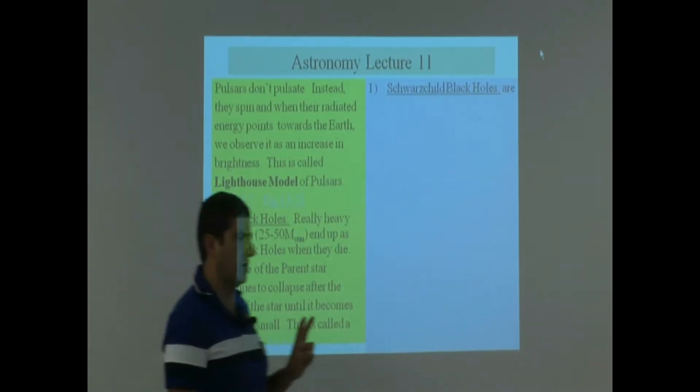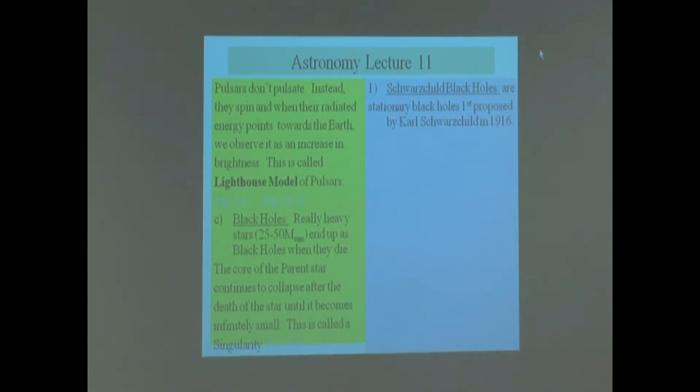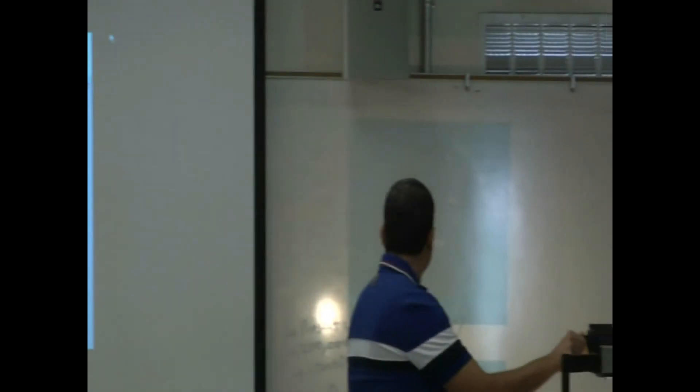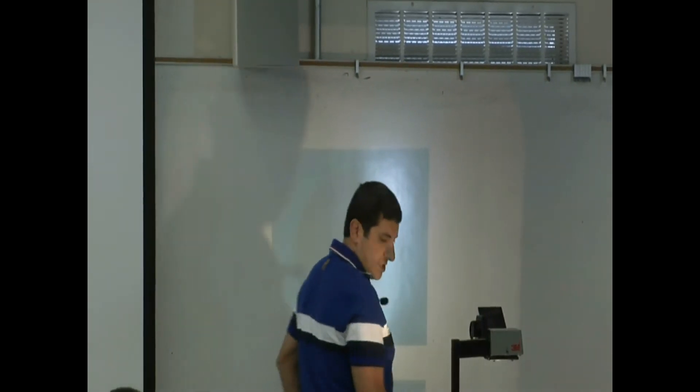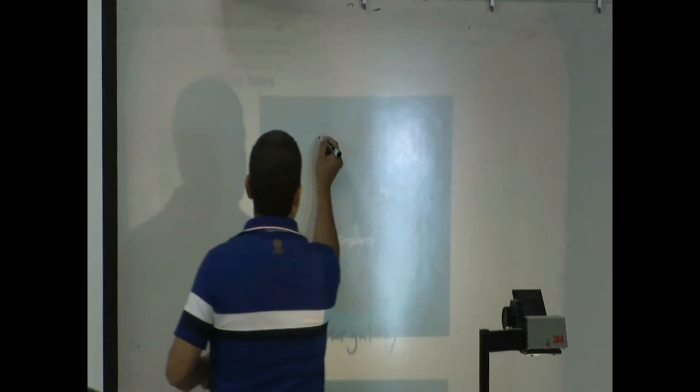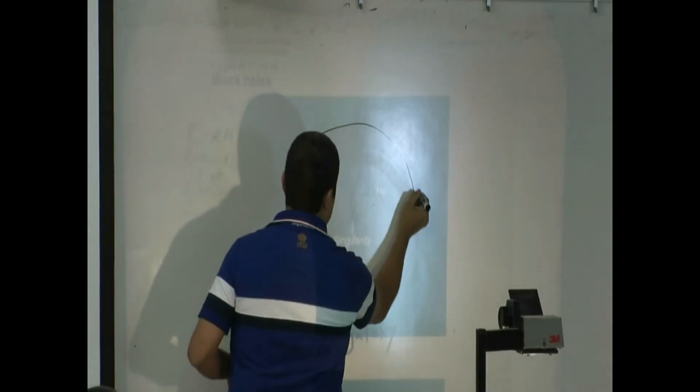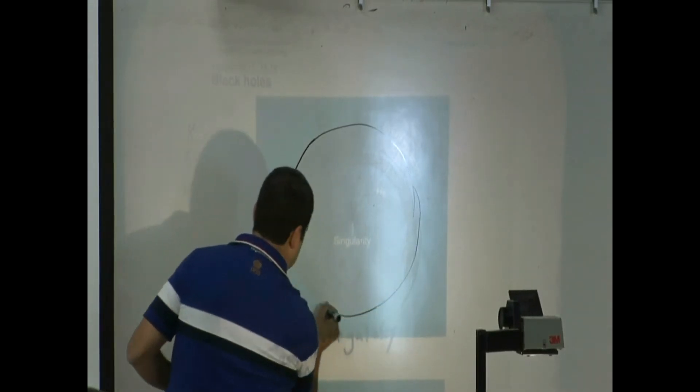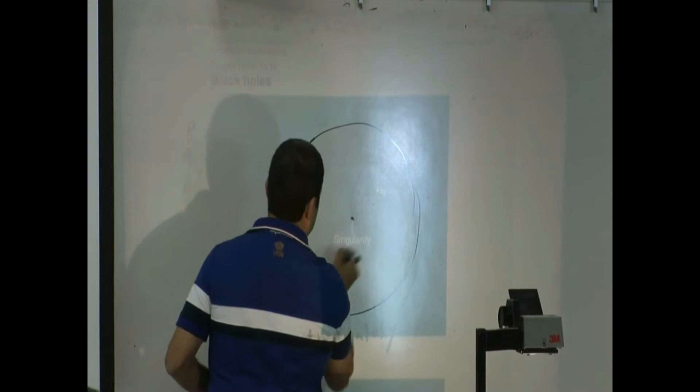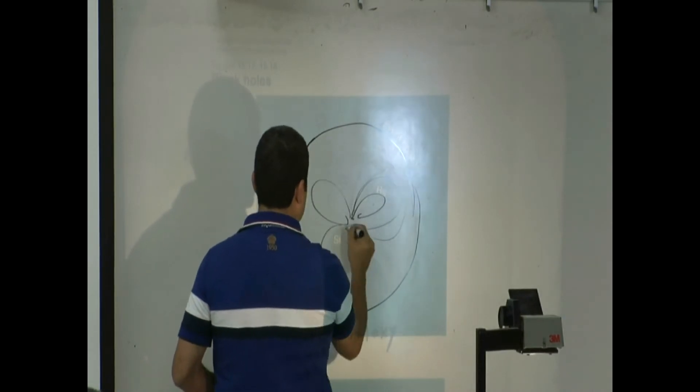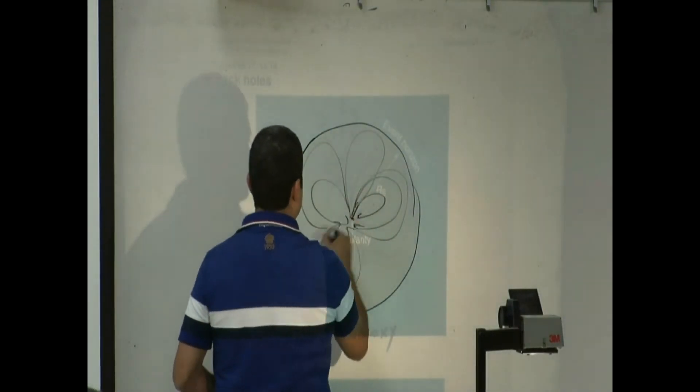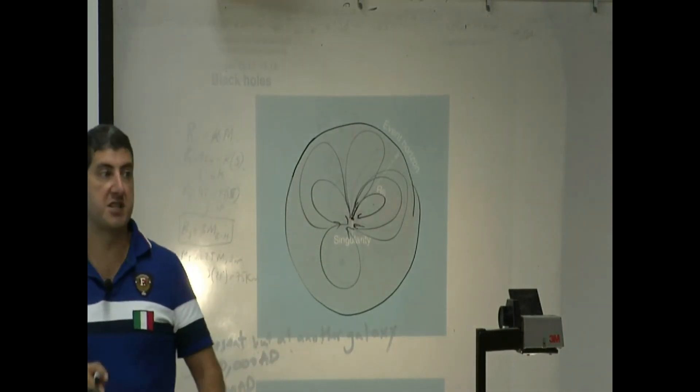There's two kinds of black holes that are predicted to exist. One is called regular black hole. This is a Schwarzschild black hole. You see, this is the event horizon. This is the singularity. So if you shine a light beam, it's going to always come back at you. It's going to get trapped. So this is a regular black hole.